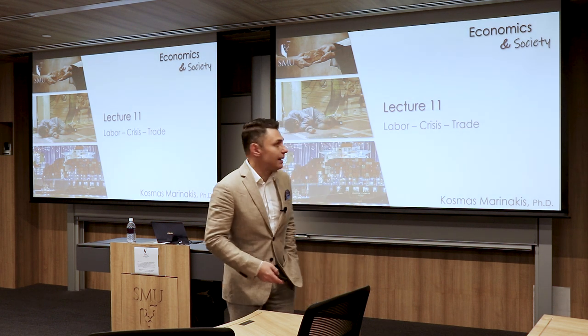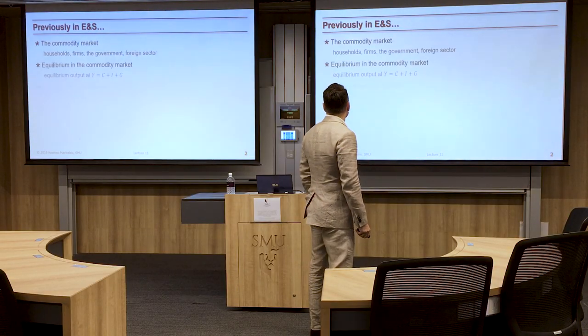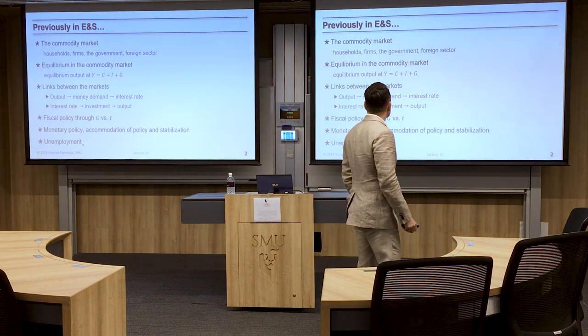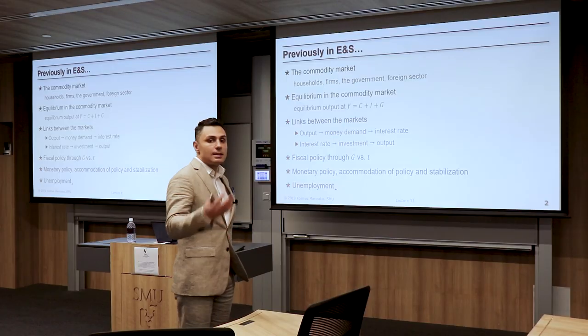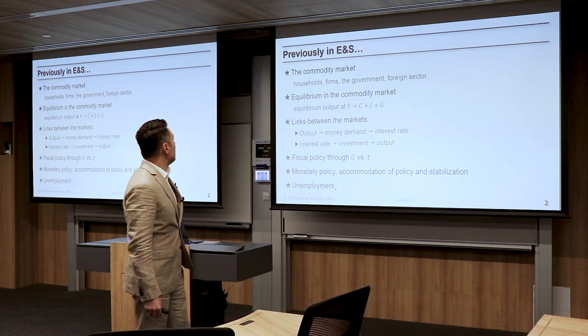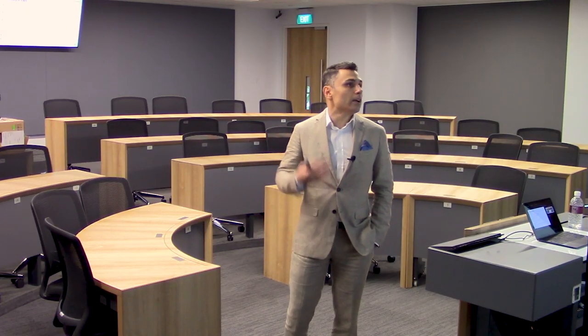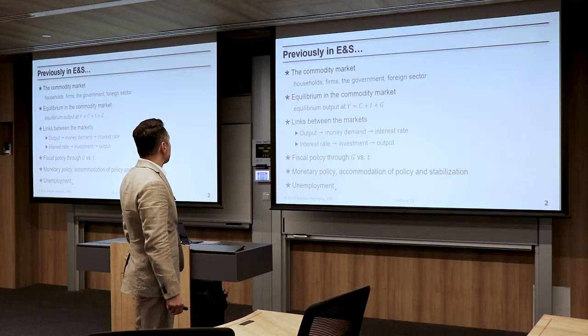Before we get started, let me catch you up with what we said last time. Previously in economics and society, we talked about the commodity market — the households, the firms, the government, and the foreign sector as participants. We talked about the equilibrium condition when total production Y is equal to total expenditure C plus I plus G.